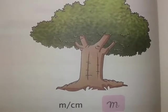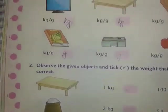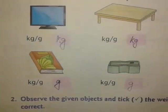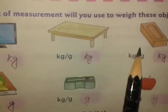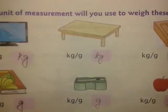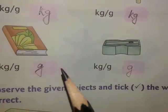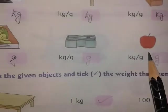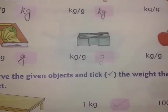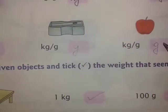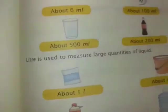Page 119 is about measurement of mass. These heavier objects - this monitor, this table, this brick - I have written here kg. And this book, sharpener, and apple are all lighter objects compared to those heavy objects, so these we will mark in grams. Check the answers from the PDF.